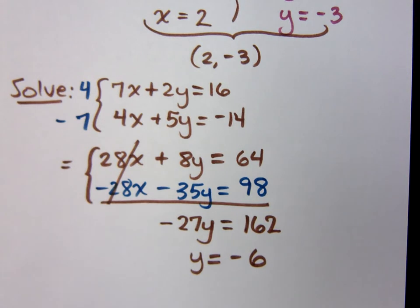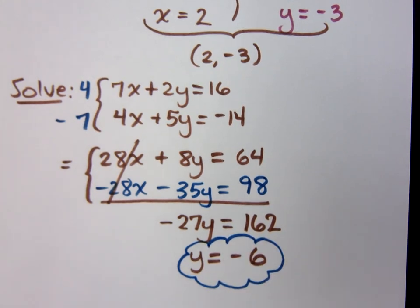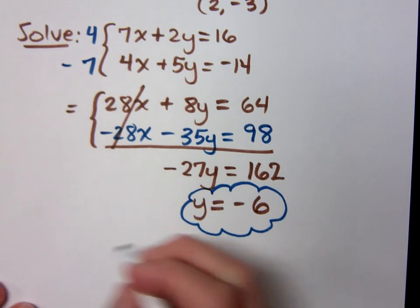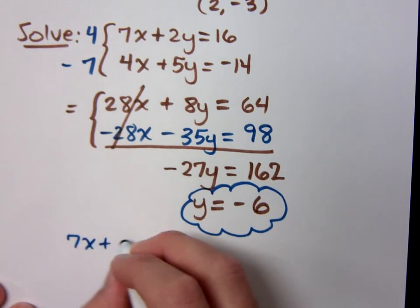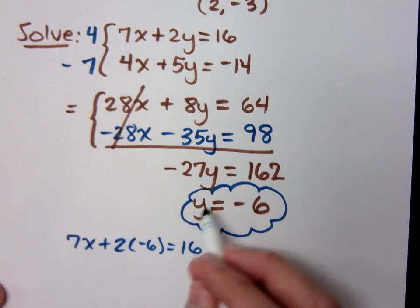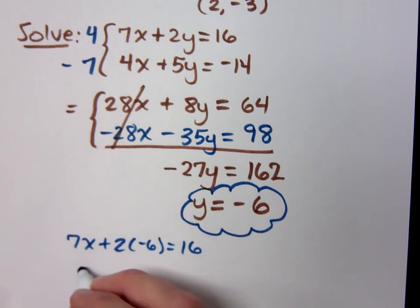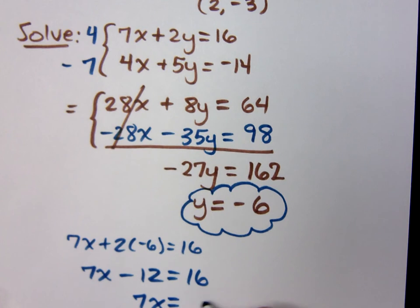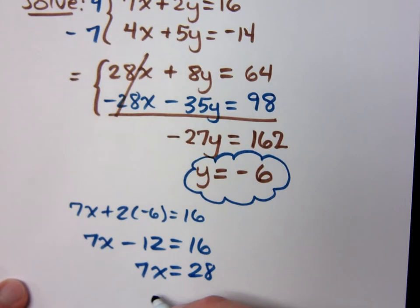Plug into one of the original equations. Which one do you want to plug it into? Actually, no, let me do this. I want to put a little cloud around this. This is not my answer, but it's part of my answer. Don't want to forget that. Plug into the first one, so it means 7X plus 2 times negative 6 equals 16. This is Y. 7X minus 12 equals 16. 7X equals what? 28. Which means X equals what? 4.